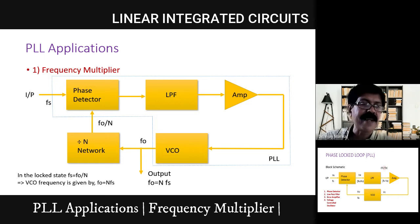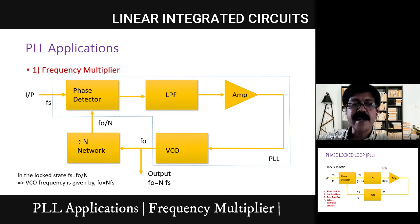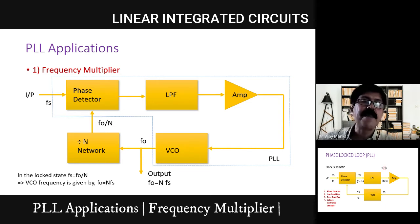The divide-by-N network can be any modulo counter. The fo/N signal is fed back, and the PLL property keeps tracking so that the two frequencies remain equal. Once the system is locked, FS equals fo/N, so at the output of VCO, fo equals N times FS. The source frequency is now multiplied by N, which we can select.